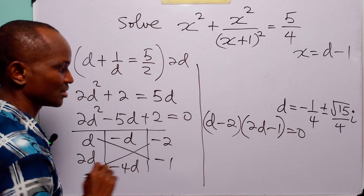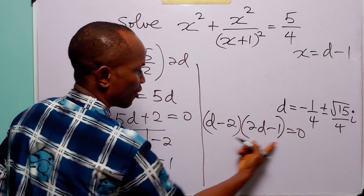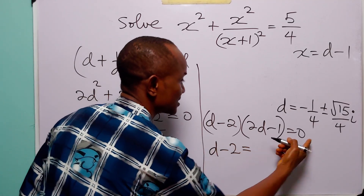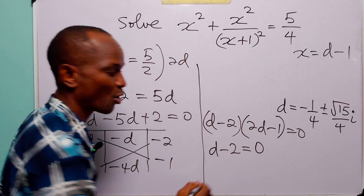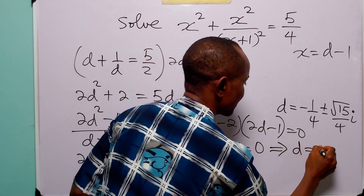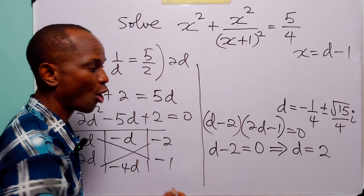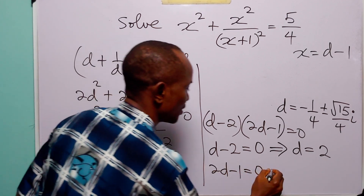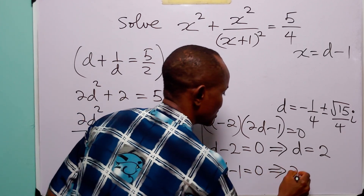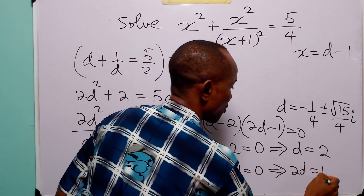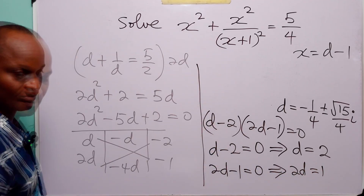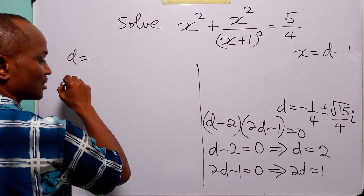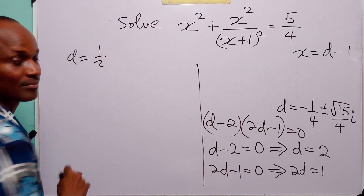So the quadratic factors as d minus 2 multiplied by 2d minus 1 equals 0. Either d minus 2 equals 0, giving d equals 2, or 2d minus 1 equals 0, giving 2d equals 1 and d equals half.